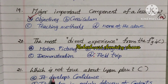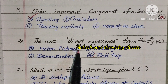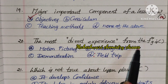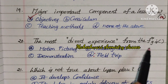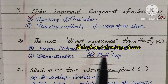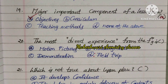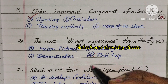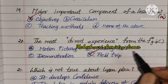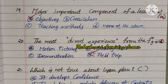Twentieth question: The most direct experience from the following — motion pictures, visual symbols, demonstration, or field trip? Field trip is the most direct experience. Option D.